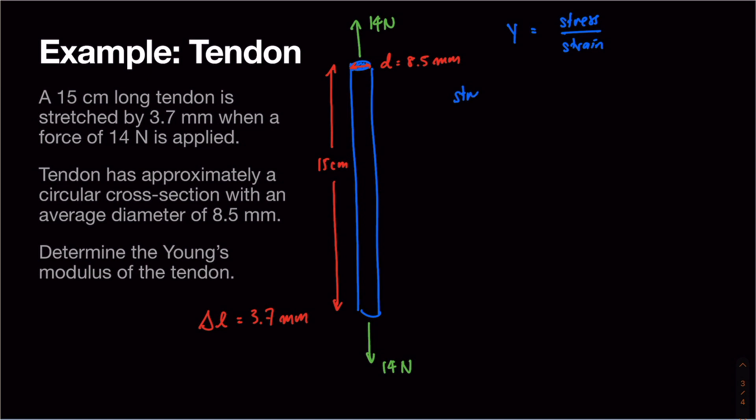Stress is given by the force applied, which is 14 newtons, divided by the area. We've been given the diameter, but we need the radius, which is half the diameter, or 4.25 millimeters.